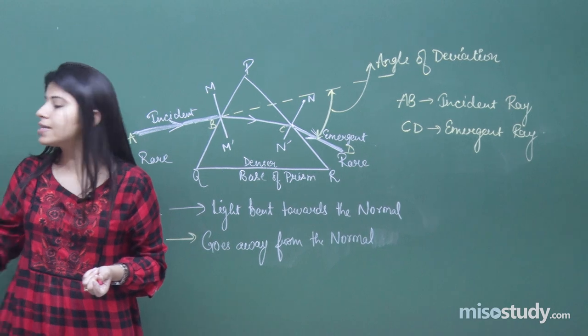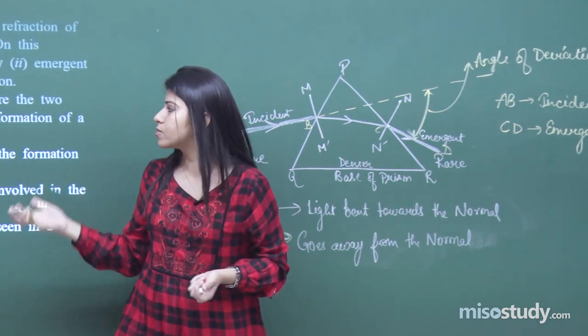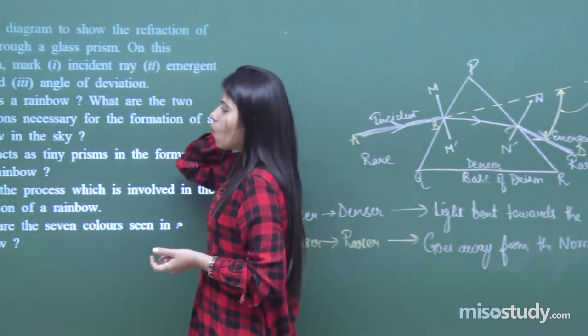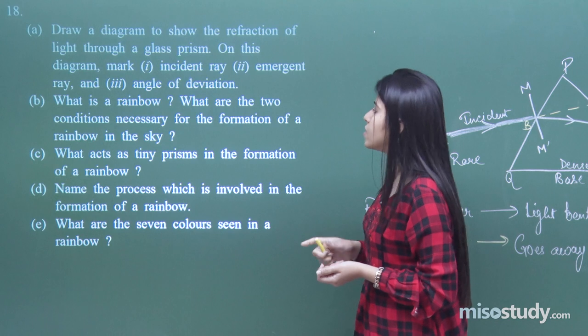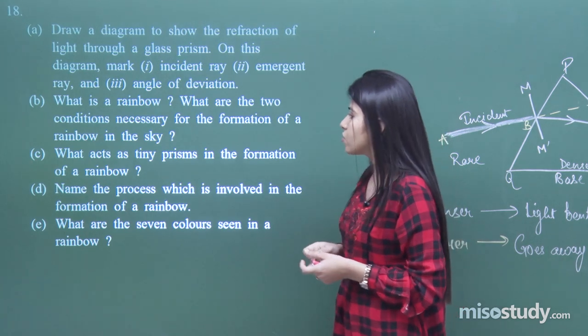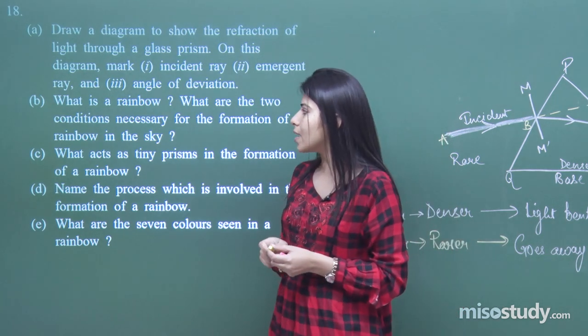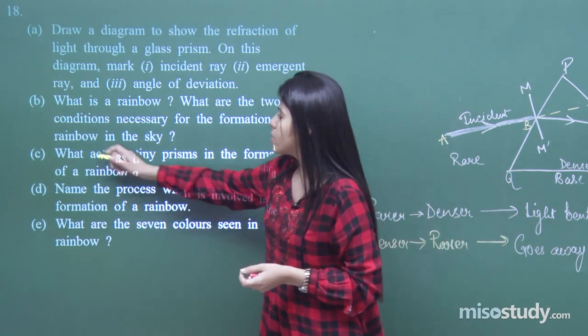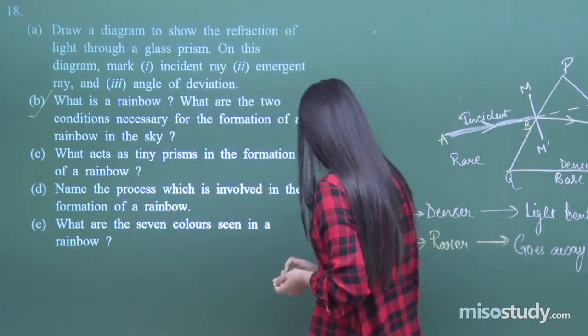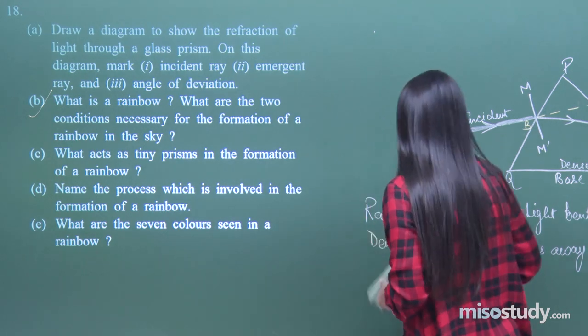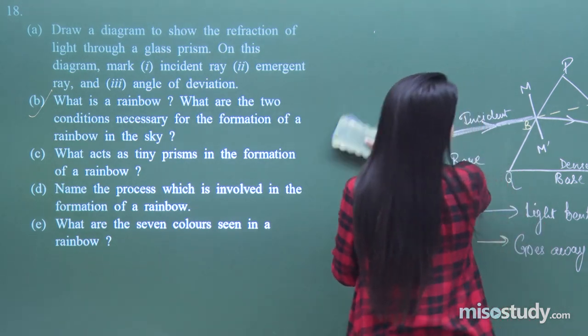Now let's move to the next part of this question: What is a rainbow? What are the two conditions necessary for the formation of a rainbow in the sky?